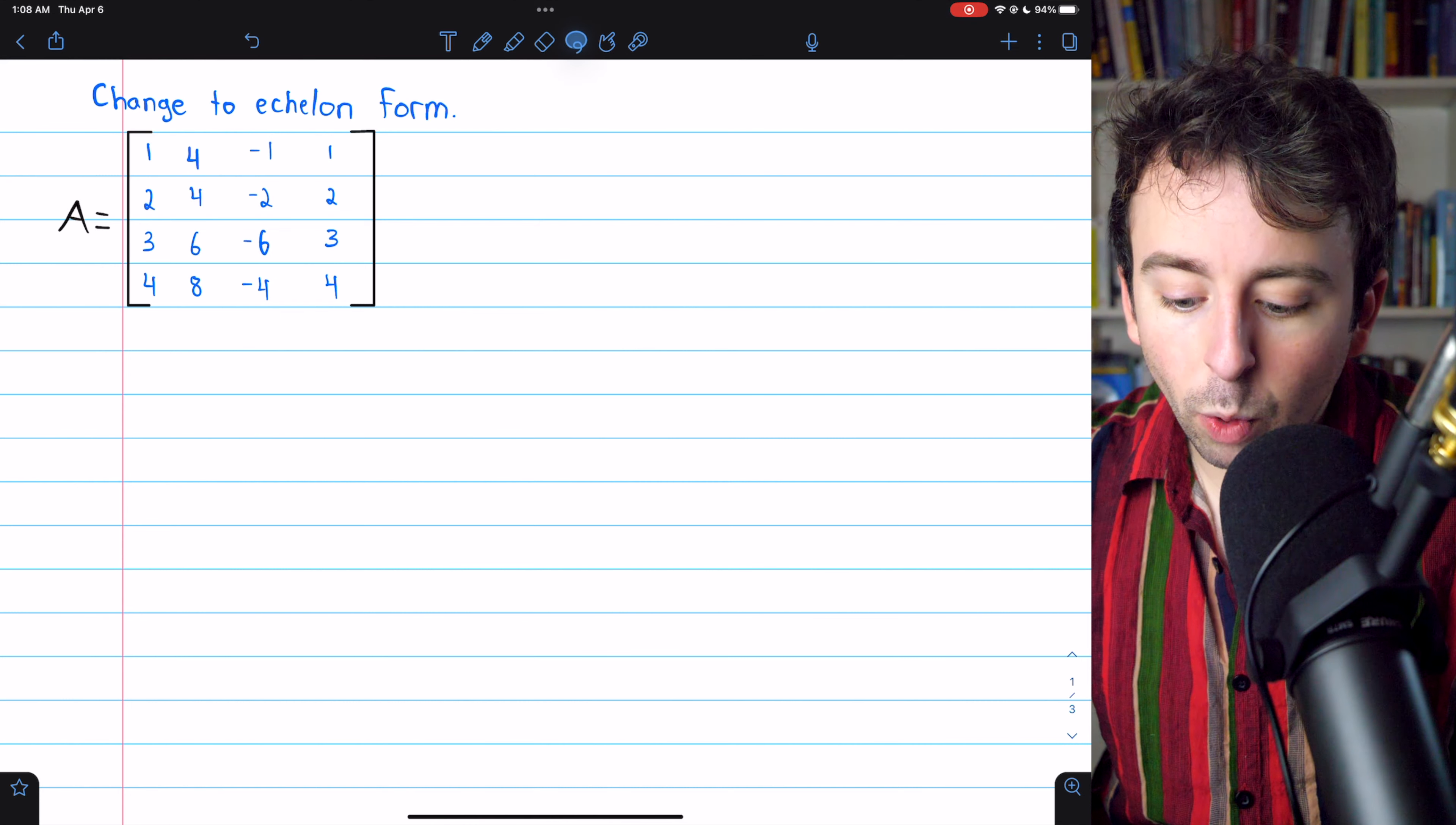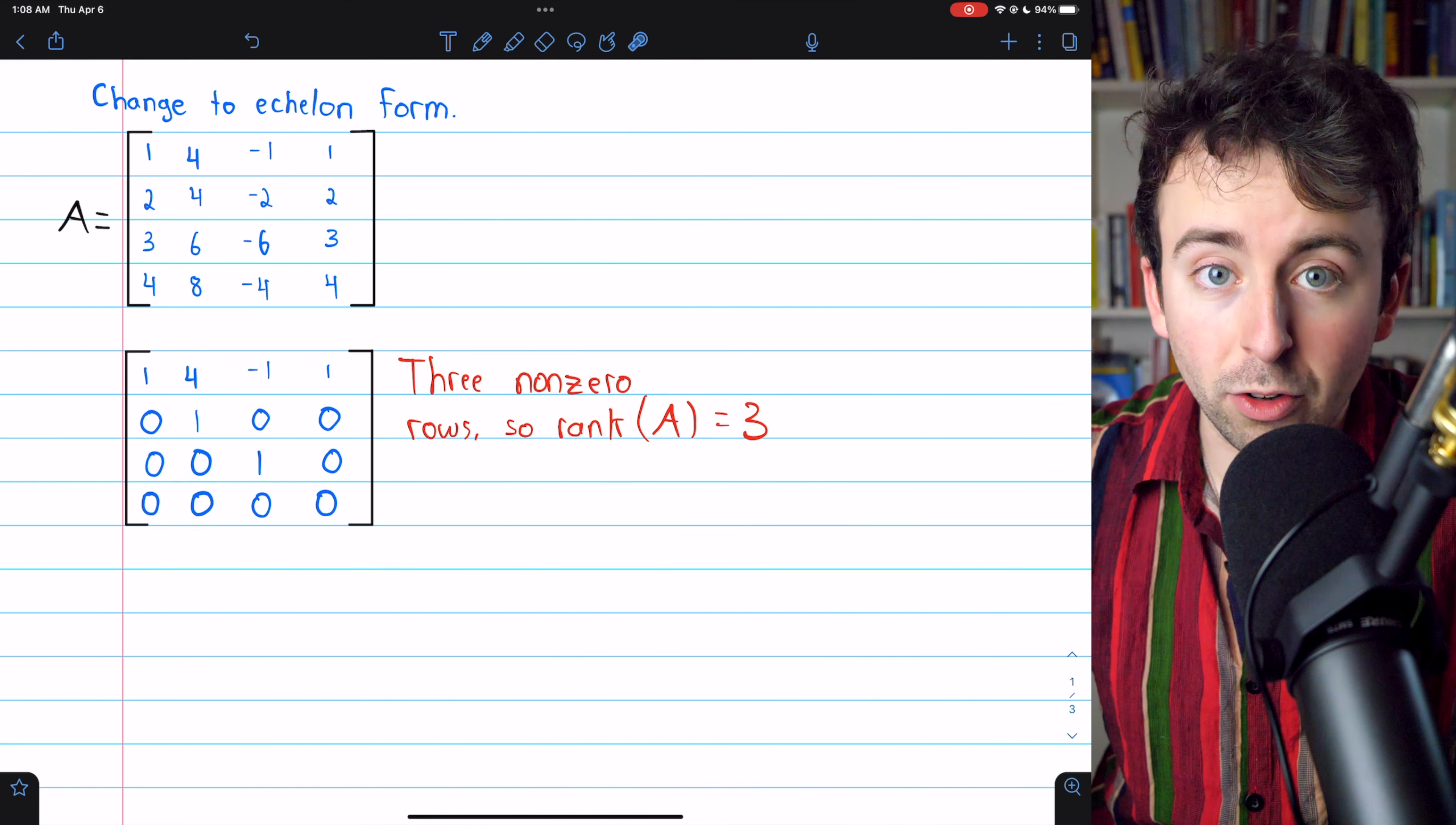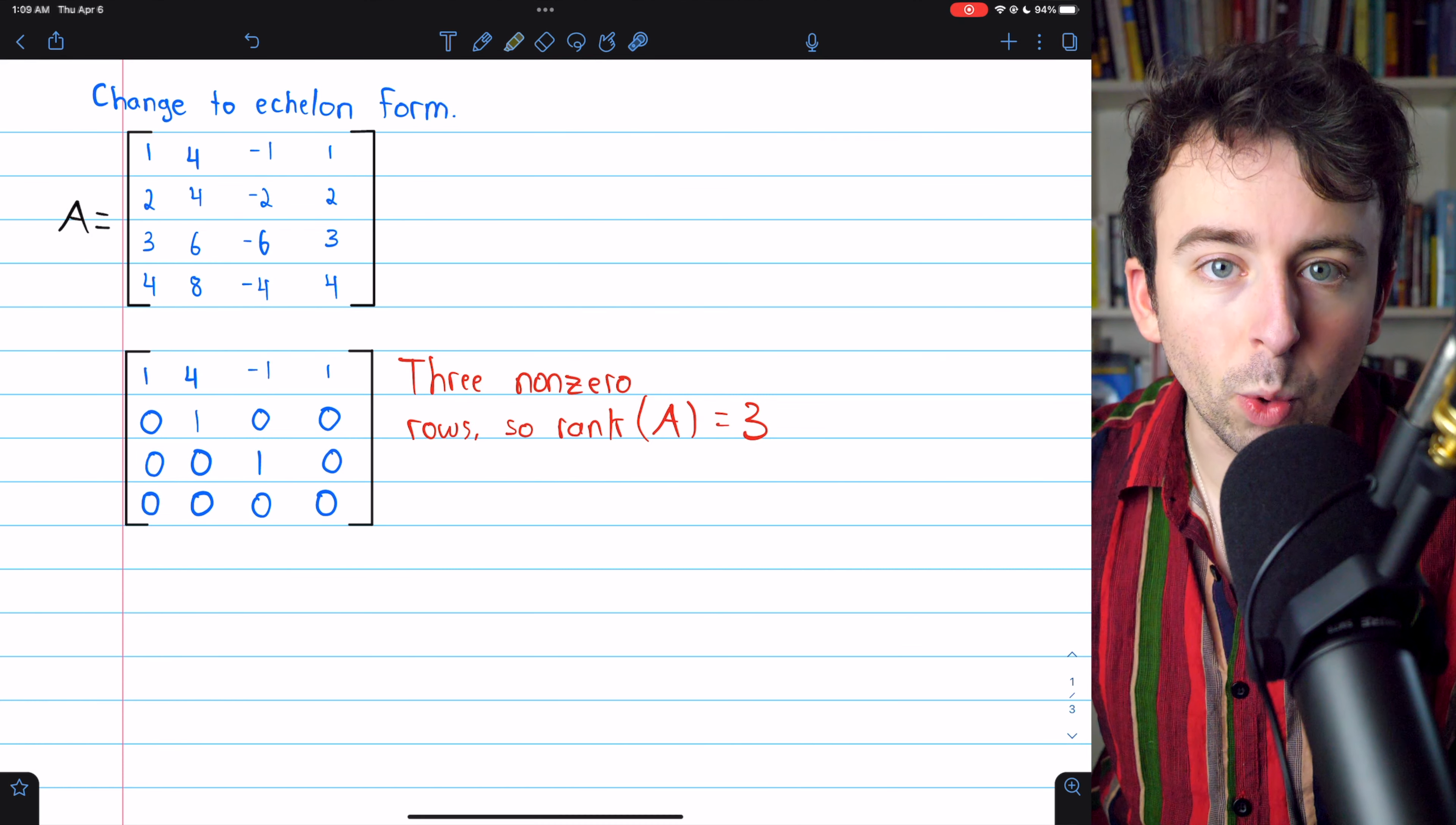And to find that, once we put the matrix in echelon form, the rank is simply the number of non-zero rows the row echelon form has. When we put this matrix A in echelon form, it's going to look like this. And this has three non-zero rows, thus the rank of A is 3.